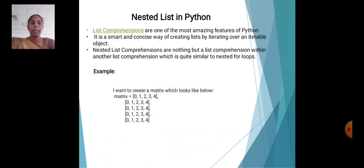Nested list in Python. List comprehensions are one of the most amazing features of Python. It is a smart and concise way of creating a list by iterating over an iterable object. Nested list comprehensions are nothing but a list comprehension within another list comprehension, which is quite similar to nested for loops.